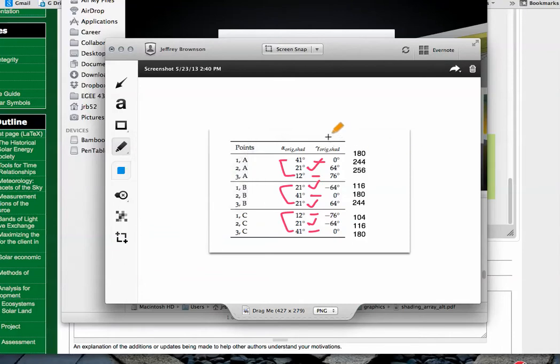Looking at the azimuth angles, the 0 degree azimuth corresponds to 180 degrees in the meteorological standard and so on down. So we're seeing that 76 degrees is equivalent to 250 degrees. And minus 64 degrees is equivalent to 116 degrees.